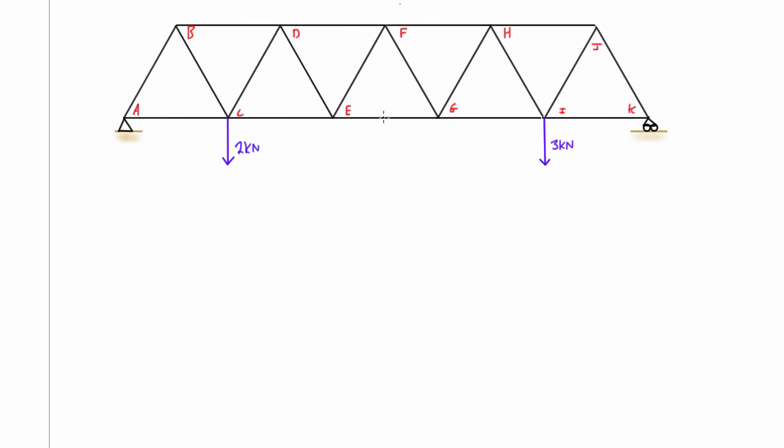This is useful if you've been asked to solve for just a single or a couple internal forces in a truss. For example, if your professor asks you to solve for the internal force in member EG here, if we were to use the method of joints it would take forever. We'd have to go joint by joint the whole way across. But with the method of sections we pretty much do it in two quick steps.